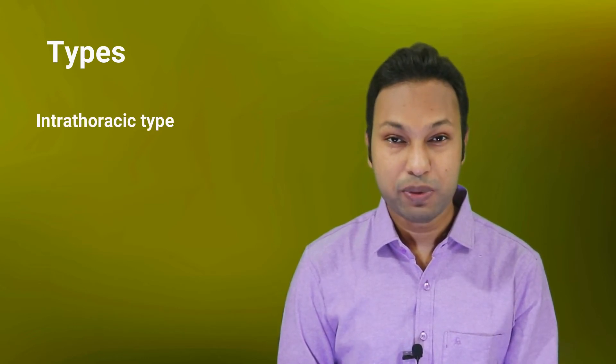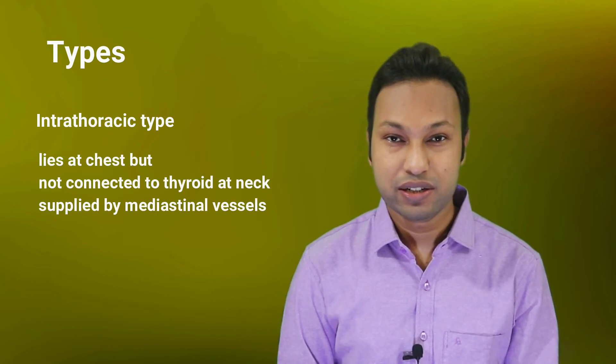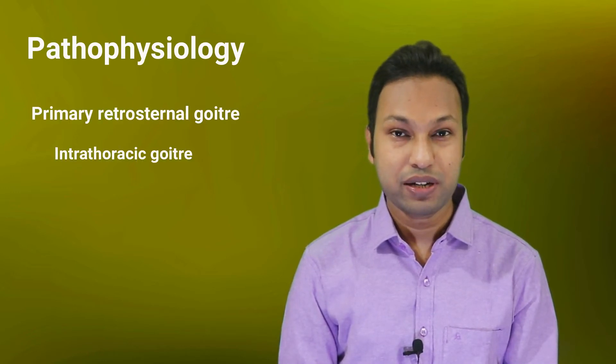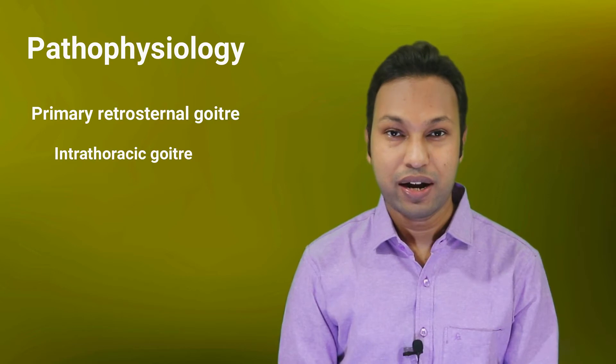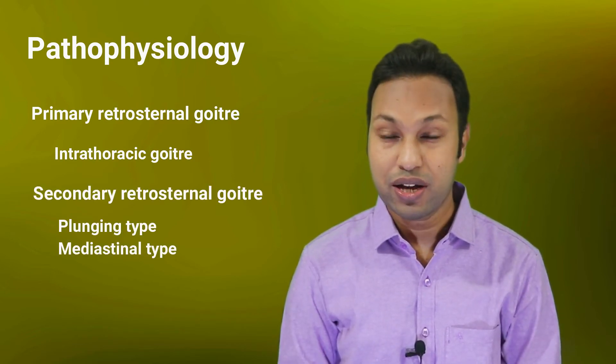Unlike mediastinal goiter, intrathoracic goiter lies completely in the chest, is not connected with the thyroid at the neck, and is supplied by mediastinal vessels. In terms of pathophysiology, the intrathoracic goiter is called primary retrosternal goiter, while the plunging type and mediastinal type are known as secondary retrosternal goiter.